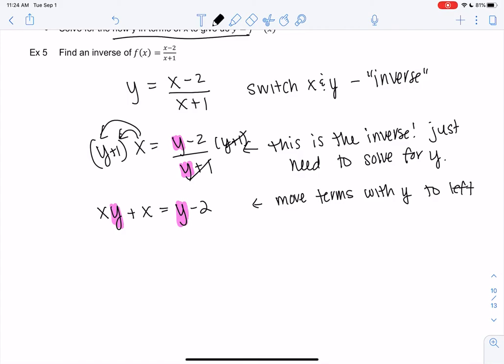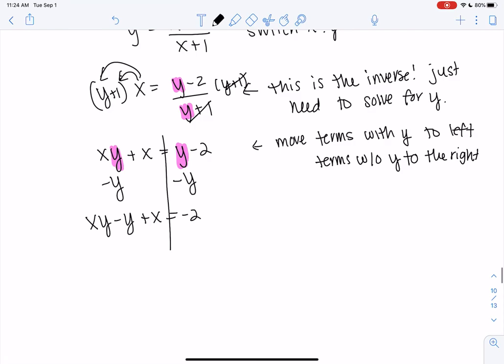All the y's go to one side, all the non-y's go to the other side. I'm going to put the y's on the left, terms without y on the right. Subtracting y from both sides: xy minus y plus x equals negative 2. Then subtract x. So xy minus y equals negative 2 minus x. We're actually very close to solving. The trick is now to factor out y.